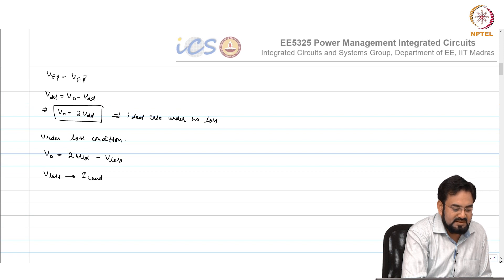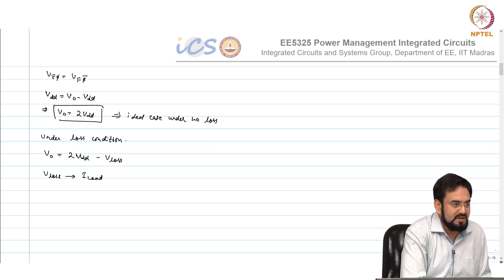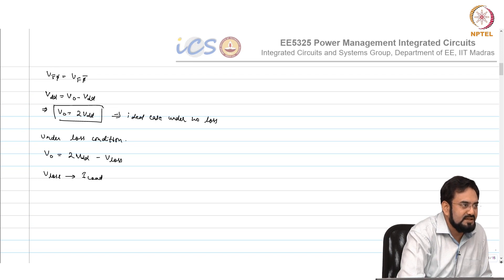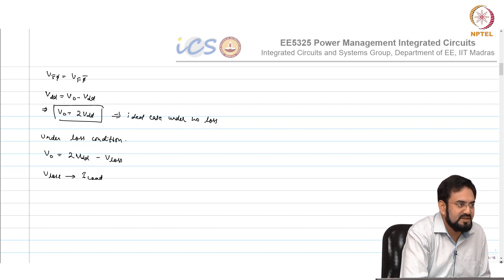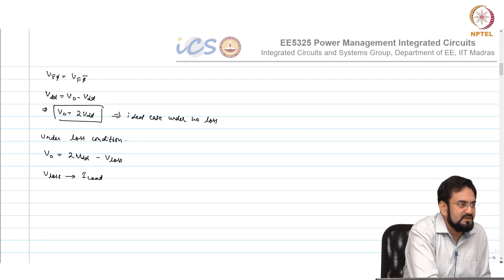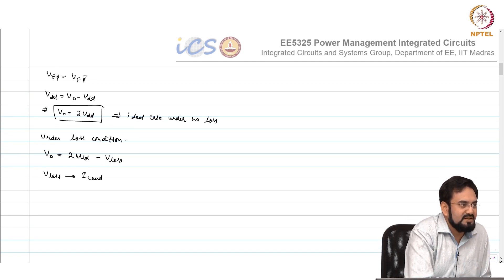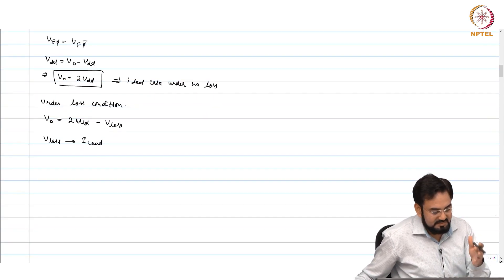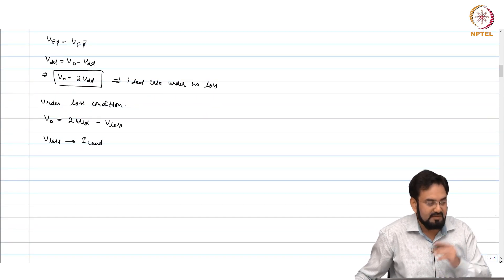That is one application. Now let us take the case of a buck converter. Say I want to regulate the output at 1V and my input is 10V, so the required duty cycle is 10 percent — almost at the lower border, and you hardly have any room to respond to transients; the duty cycle is almost saturated. What you do is divide by 2 using a charge pump: 10V becomes 5V, and from there with roughly a 20 percent duty cycle you can get 1V output. So in open loop these are the applications, but sometimes we use the charge pump in closed loop as well to regulate the output.